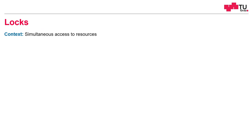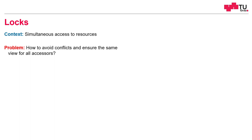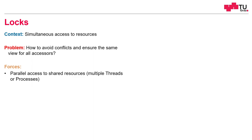We use locks in the context of simultaneous access to resources — we have multi-threading or multi-processing, and we want to avoid conflicts. We want to ensure a sequence of access in order to stay consistent. The forces are: we have parallel access to shared resources, so reading and writing; we change the shared resources; we are on one machine, so we are in the same address space; and we have read or write access.